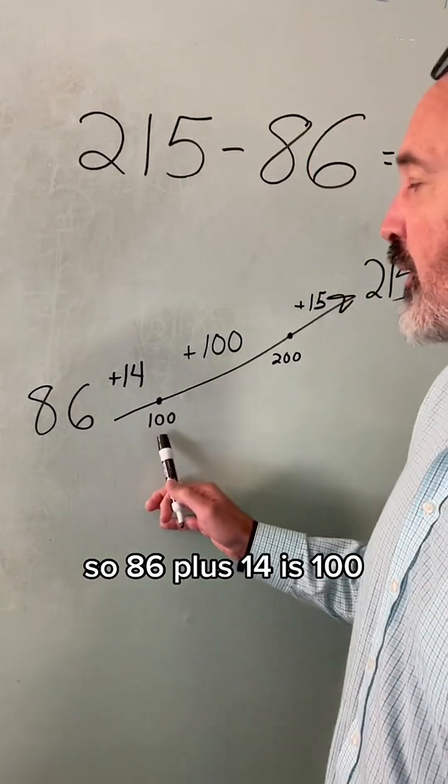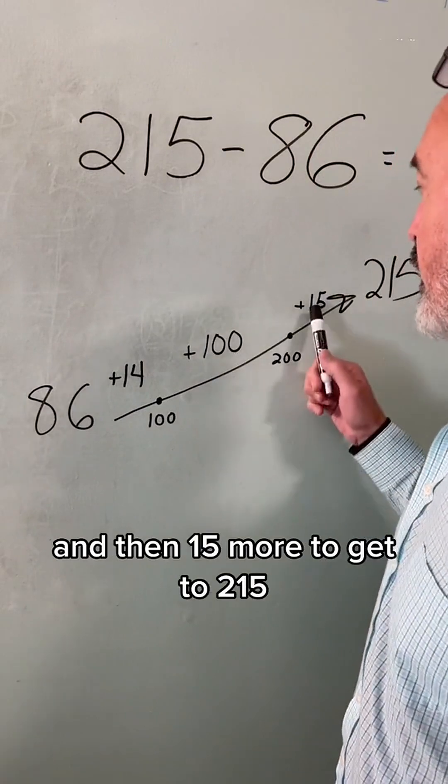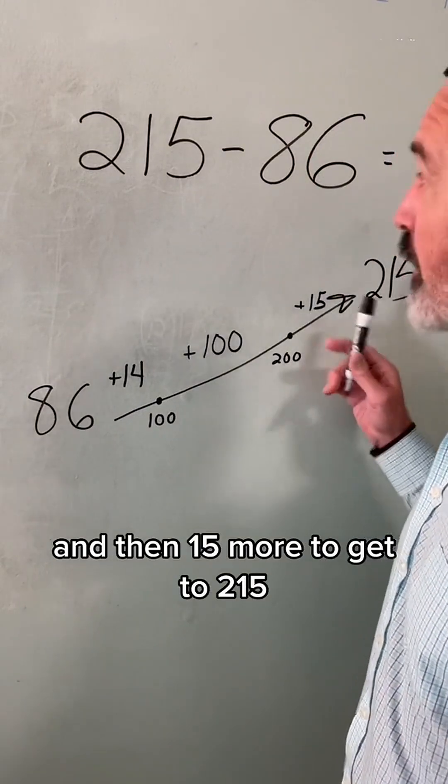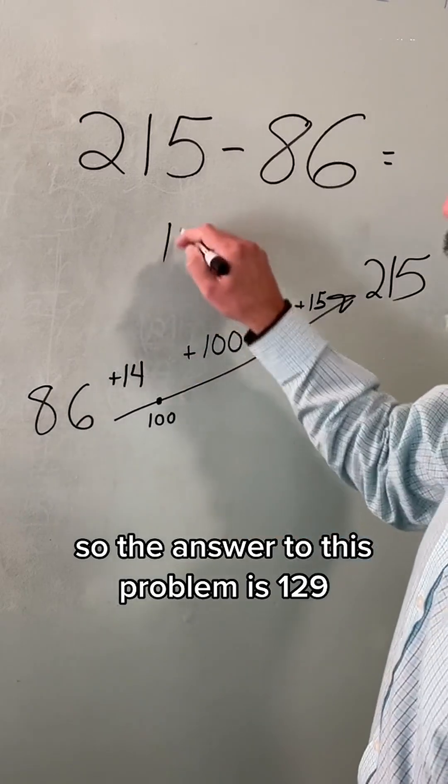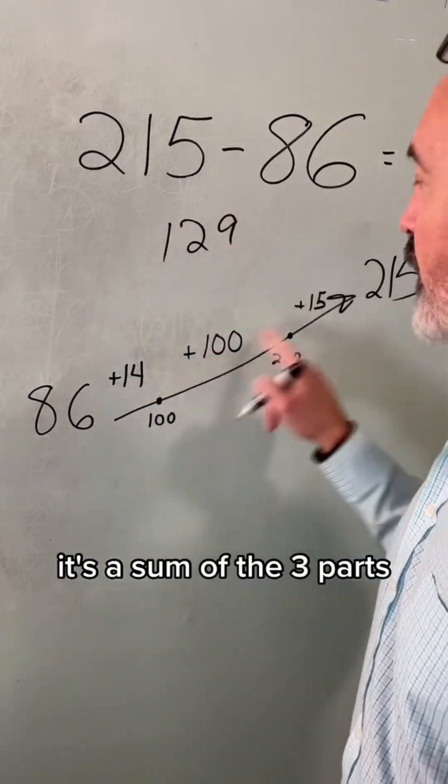So 86 plus 14 is 100, 100 more to get to 200, and then 15 more to get to 215. So the answer to this problem is 129. It's the sum of the three parts.